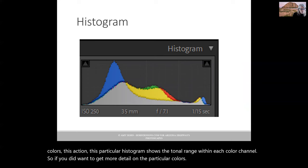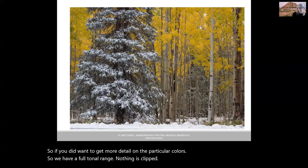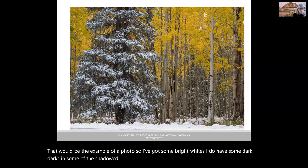So we have a full tonal range. Nothing is clipped. And that would be the example of the photo. I've got some bright whites, I do have some dark darks in some of the shadowed areas, but I have a full tonal range.